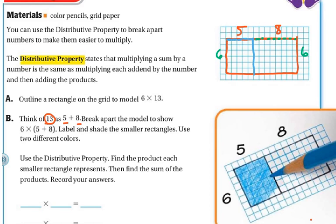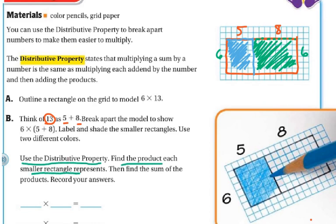So this side is going to be blue. And this side is going to be green. I didn't do a very good job shading, but you'll do a much better job than I will. Then it says, use the distributive property. Find the product of each smaller square represents, and then find the sum of the products and record your answer. Well, if I color it in, you really can't see it very well. So let me just erase that a little bit so you can see it. I'll just kind of keep the border there.